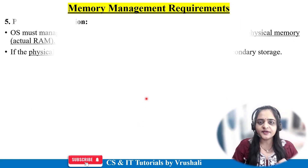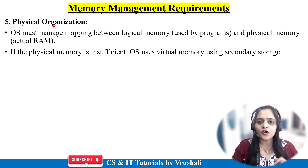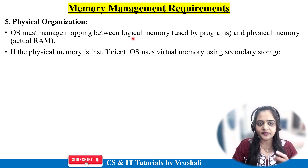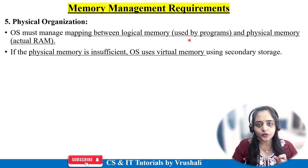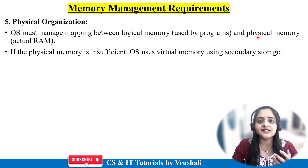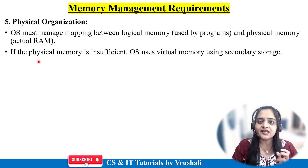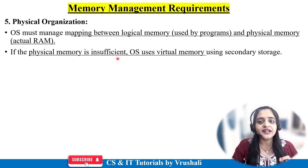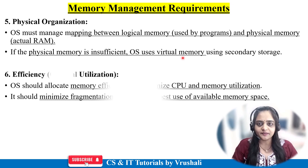The next memory management requirement is physical organization. In operating system there are two types of memory: logical memory and physical memory. Logical memory is used by programs; physical memory is your actual RAM (random access memory). The OS ensures every memory device is used effectively and appropriately. If physical memory is insufficient, the operating system uses virtual memory for execution.